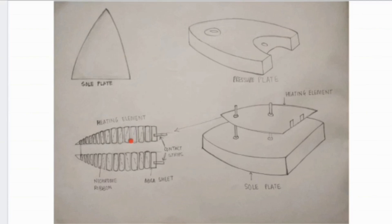This nichrome wire is covered in mica sheet. Mica is a good conductor of heat and a bad conductor of electricity. This prevents electricity from passing to the iron plate.